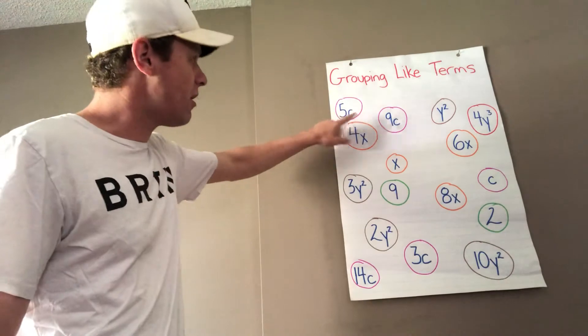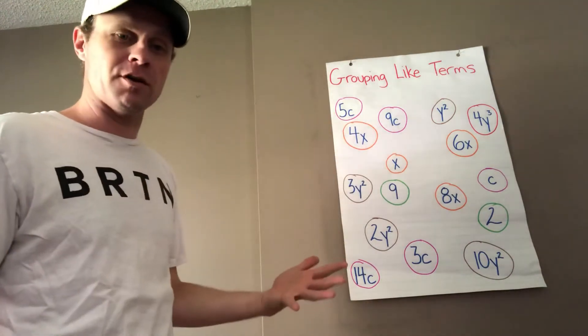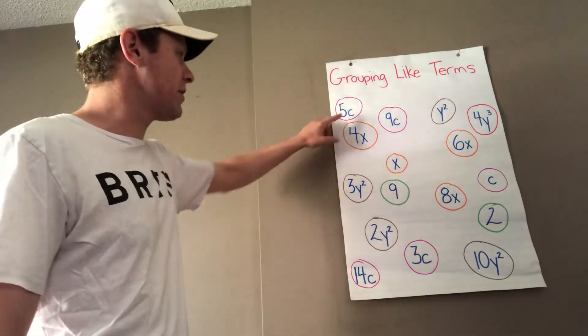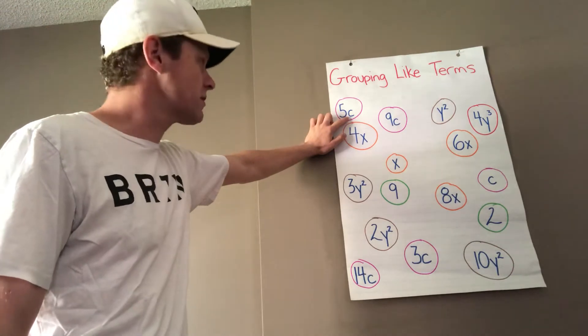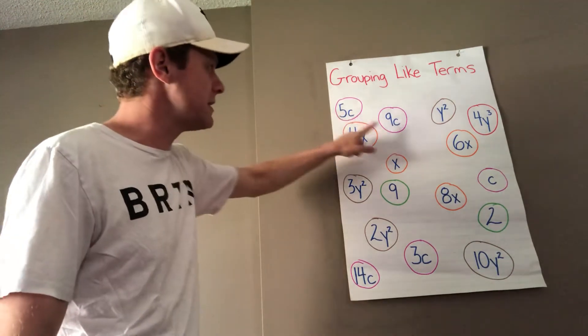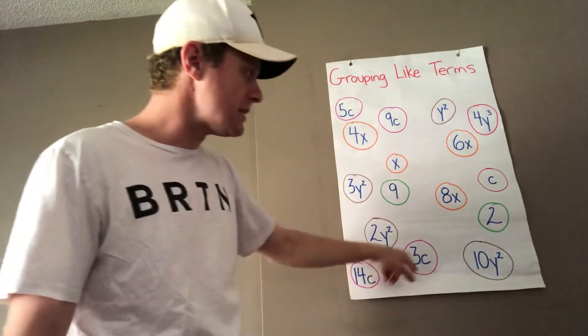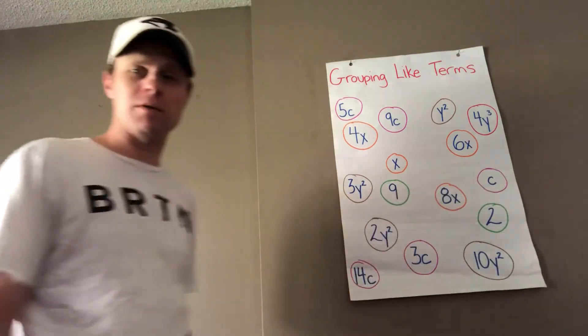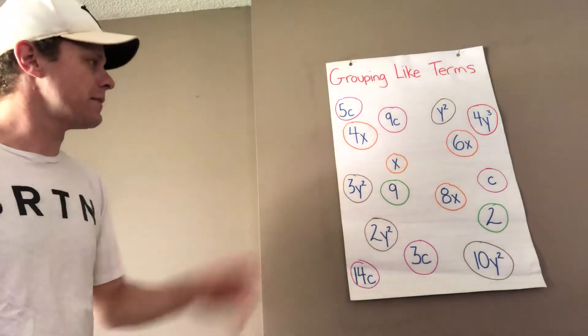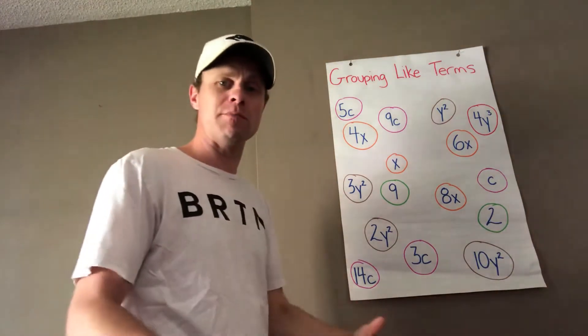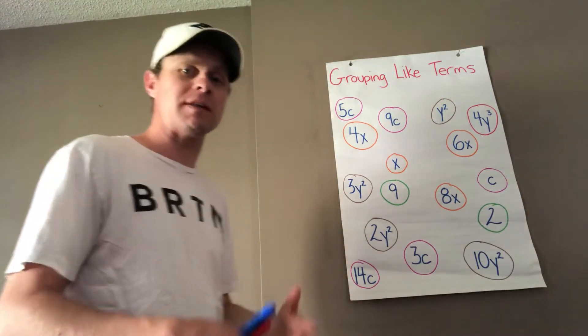So for instance, all of the terms that have the variable c we circled. So 5c, 9c, 14c, 3c, nc or 1c and so on for all of the others. So it's important that we are able to group the like terms.